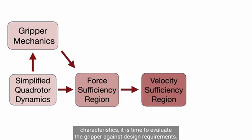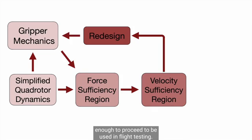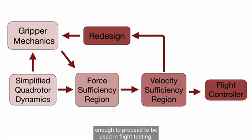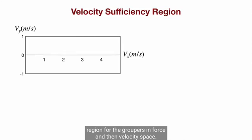With these experiments and gripper characteristics, it is time to evaluate the gripper against design requirements. It either does not meet the design specs and requires a redesign process, or good enough to proceed to be used in flight testing. Combining the modeling and experimental setup, we can construct a sufficiency region for the gripper in force and then in velocity space.